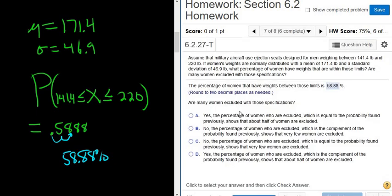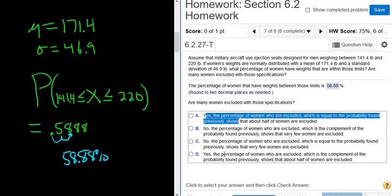It says, are many women excluded with those specifications? Yes, I think so. Only 58.88% of women meet the requirements for these ejection seats. So the complement of this is like 41 point something. So over 40% of women are being excluded. So I would say it's one of the yeses. So it's either A or D.